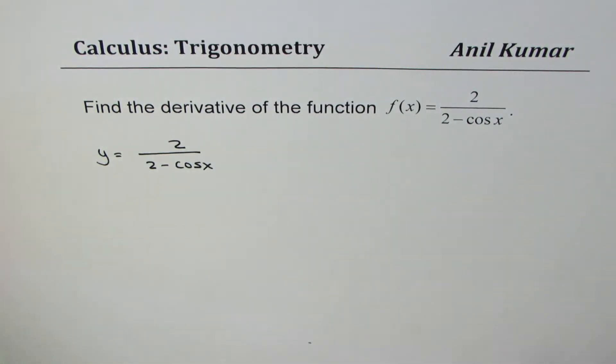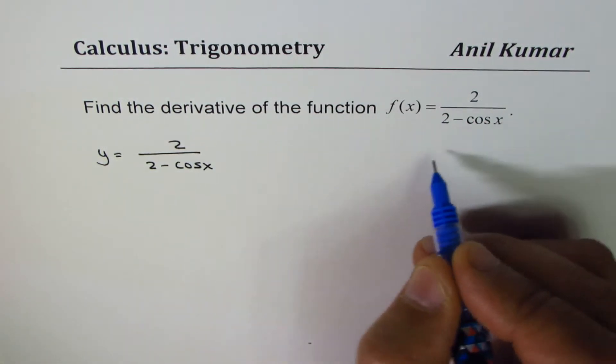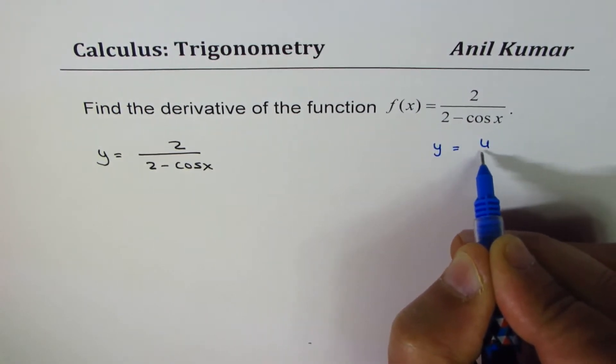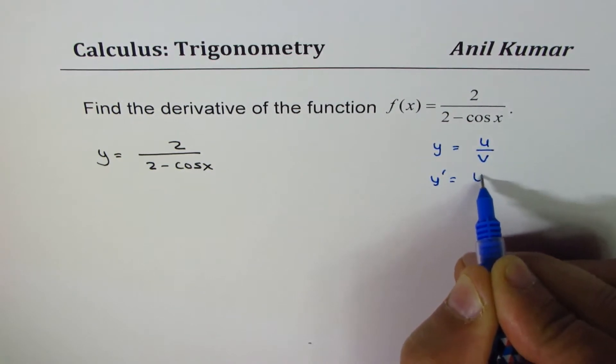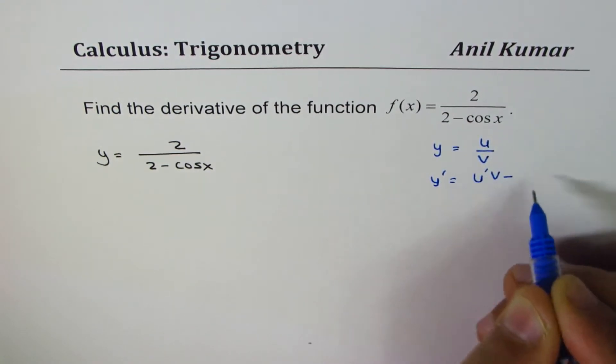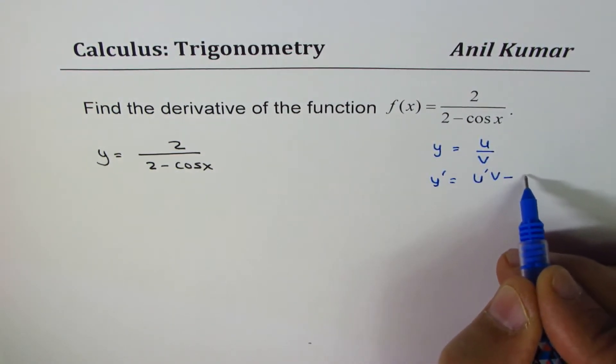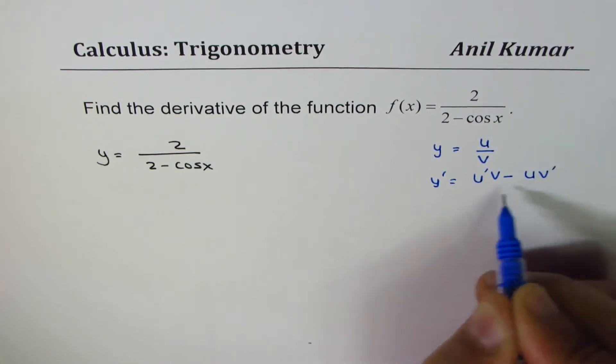If you apply the quotient rule, let me give a formula here. If y equals u over v, then y dash equals derivative of u times v minus u times derivative of v divided by v squared.